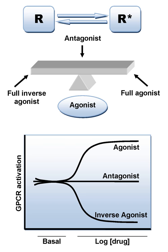An adrenergic antagonist is a drug that inhibits the function of adrenergic receptors. There are five adrenergic receptors, which are divided into two groups. The first group are the β-adrenergic receptors: β-1, β-2, and β-3 receptors. The second group contains the α-adrenoreceptors: α-1 and α-2 receptors. Adrenergic receptors are located near the heart, kidneys, lungs, and gastrointestinal tract.